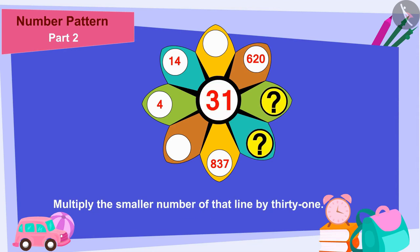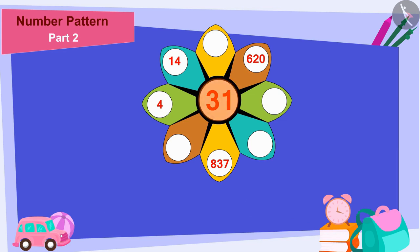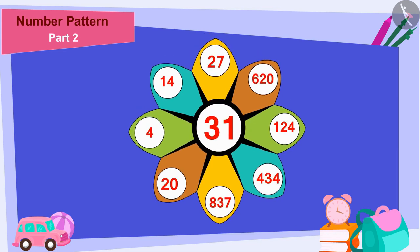To find the smaller number for each line, we have to divide the larger number of that line by 31. And to find the larger number, multiply the smaller number of that line by 31. In this way we can fill all the blanks. Well done, children.